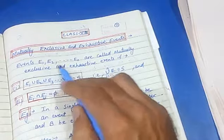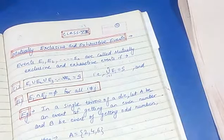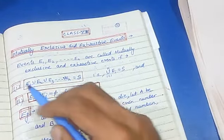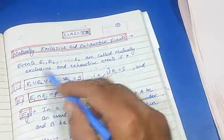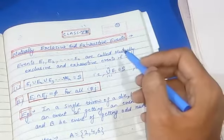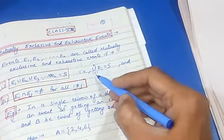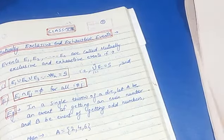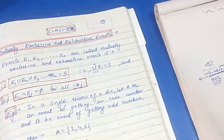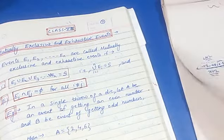This means for events E1, E2, up to EN, we can write it as: union from I equal to 1 to N of EI equals S. This notation is important — it is frequently asked in exams, especially in MCQs, so you should know this condition well.